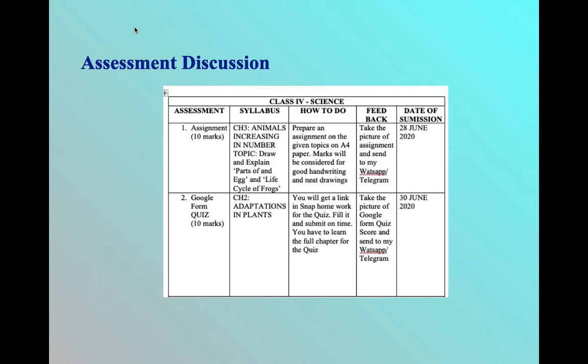For the assignment, you have to do the assignment from Chapter 3: Animals Increasing in Number. I have given two topics: draw and explain parts of an egg, and life cycle of frogs. For the hand, you have to take four sheets. Front page is for writing assignment topics and your name.